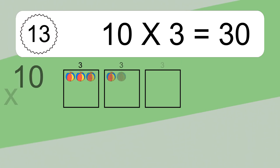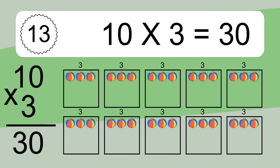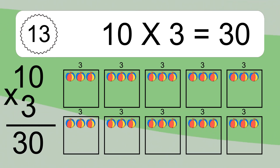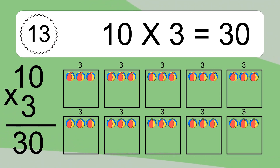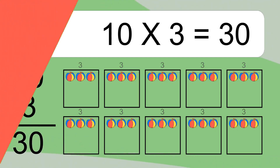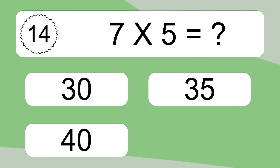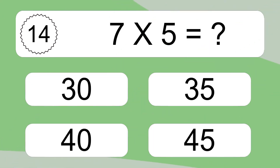10 times 3 equals 30. We have 10 boxes and each box has 3 colorful balls inside. If you count all the balls in all the boxes together, you will have 10 times 3 balls. This equals 30 balls. 7 times 5 equals what?